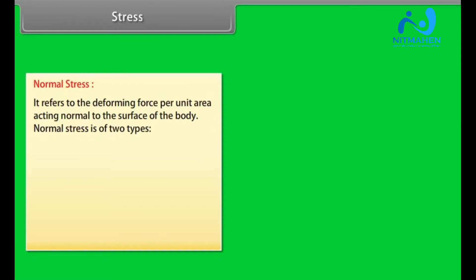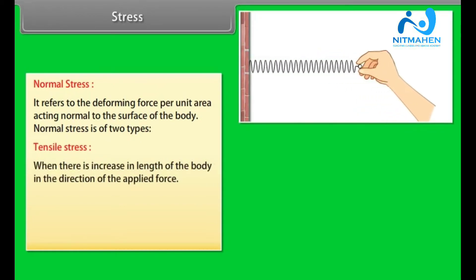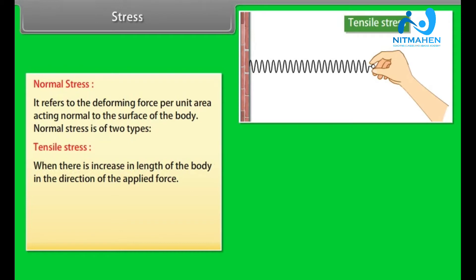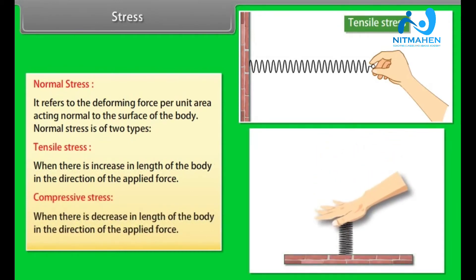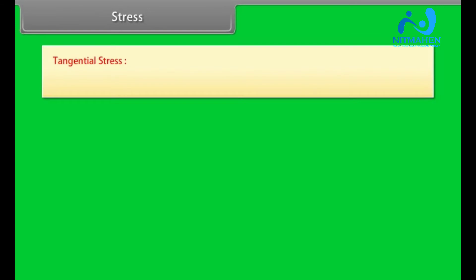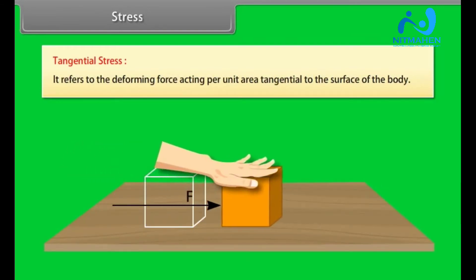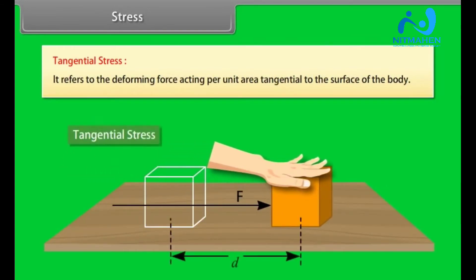Normal stress is of two types: tensile stress, when there is increase in length of the body in the direction of the applied force, and compressive stress, when there is a decrease in length of the body in the direction of the applied force. Tangential stress refers to the deforming force acting per unit area tangential to the surface of the body.